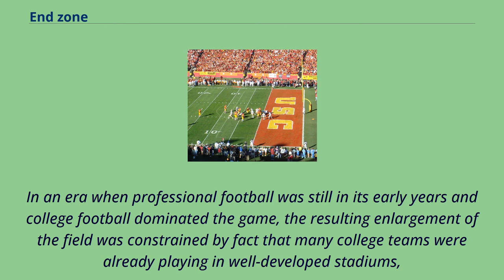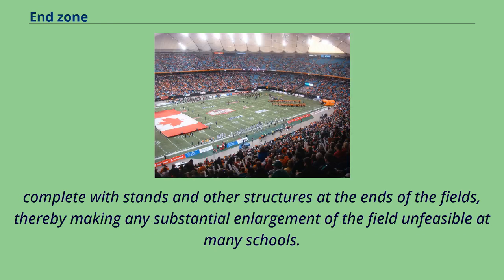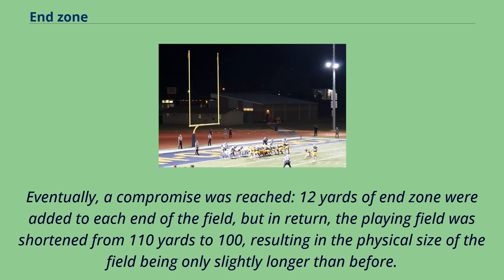In an era when professional football was still in its early years and college football dominated the game, the resulting enlargement of the field was constrained by the fact that many college teams were already playing in well-developed stadiums, complete with stands and other structures at the ends of the fields, thereby making any substantial enlargement of the field unfeasible at many schools. Eventually a compromise was reached: 12 yards of end zone were added to each end of the field, but in return the playing field was shortened from 110 yards to 100, resulting in the physical size of the field being only slightly longer than before.